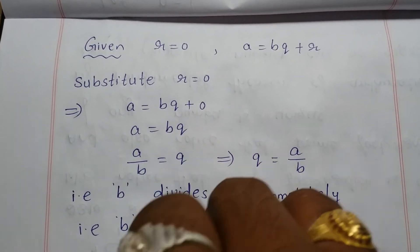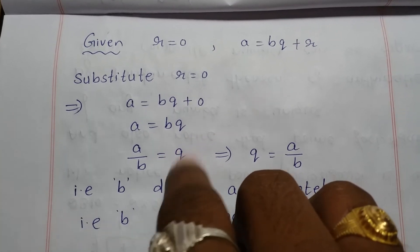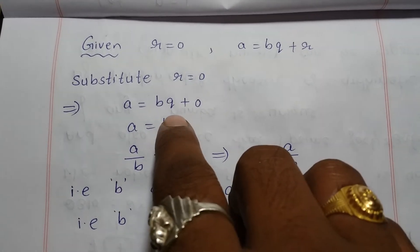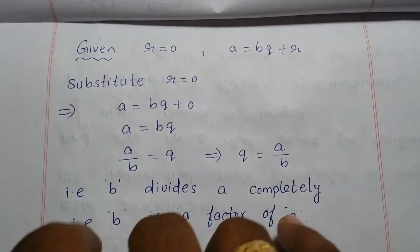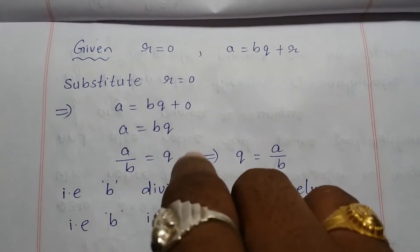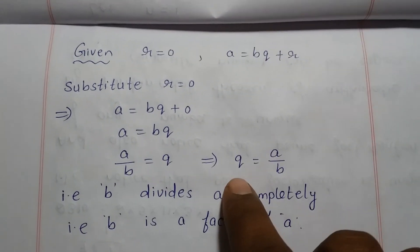is equal to bq. So here quotient is nothing but a/b. If you transpose, this b is in multiplication, it will go to division, so that is a/b = q. q is nothing...